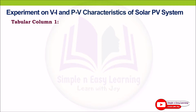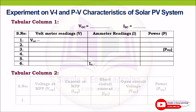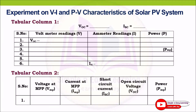Here is the tabular column. In tabular column 1, observe the open circuit voltage and short circuit current, tabulate the readings, find the power, and note the maximum power. In tabular column 2, mention the voltage at maximum power point, current at maximum power point, short circuit current, open circuit voltage, and power at maximum power point. Using tabular column 2, you can obtain the fill factor.